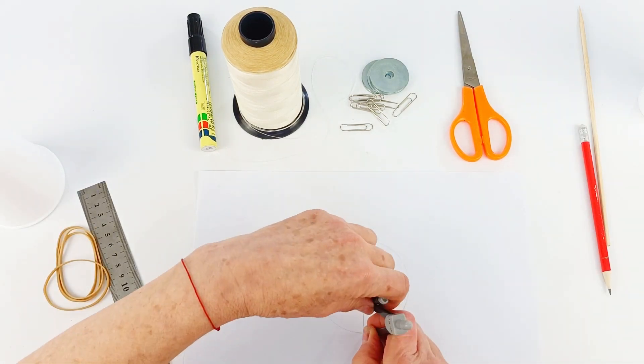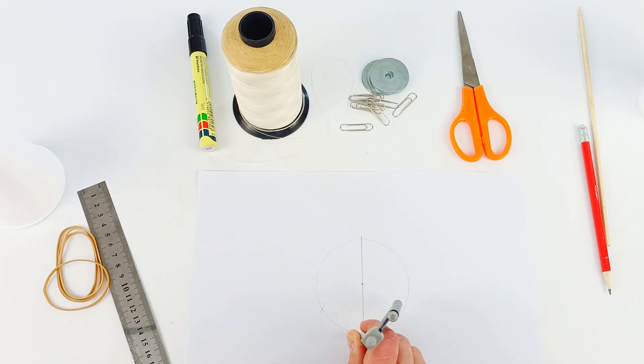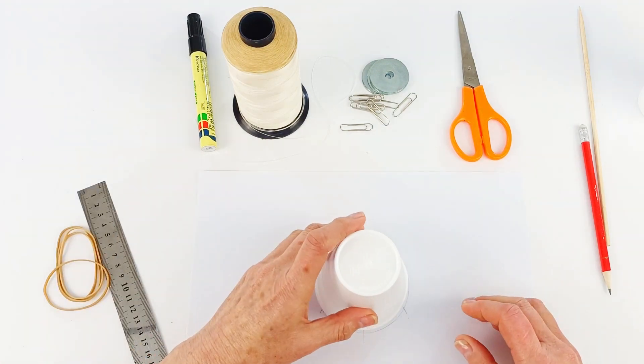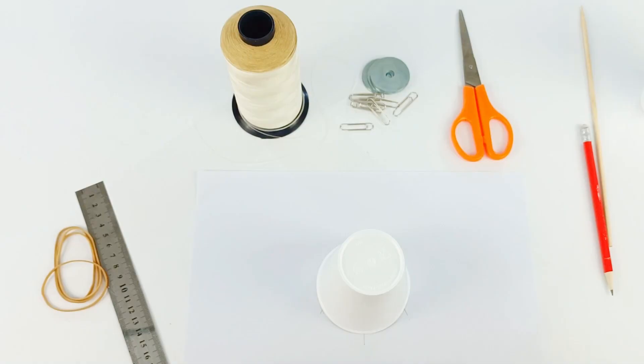And then we're going to use a compass from our geometry set. So we're going to be using a little math here to find the three points that are equal distance from each other.